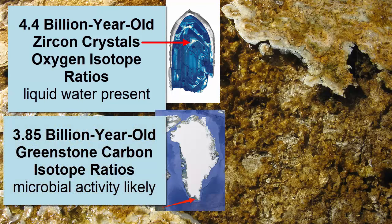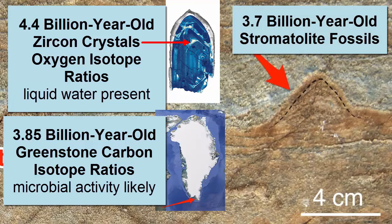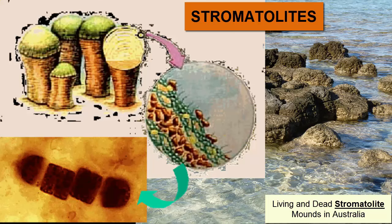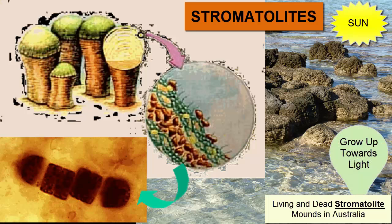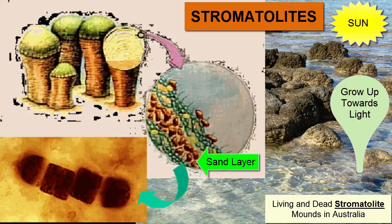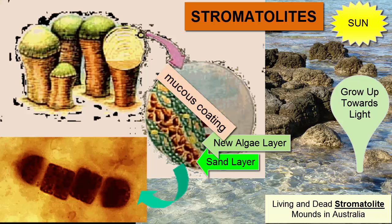A 3.85 billion year old rock from Greenland was found to have carbon isotope ratios suggestive of microbial activity. However, the first fossil evidence we have are stromatolite mounds found in 3.7 billion year old rocks from Greenland. Stromatolite mounds form by successive layers of photosynthesizing cyanobacterial mats growing in a coastal environment and doming upwards towards the light. Each layer trapped sand within it, ultimately blocking the light, requiring new layers to form atop the old ones. The cyanobacteria are protected from the ultraviolet rays of the sun by the thick mucus coating in which they live.